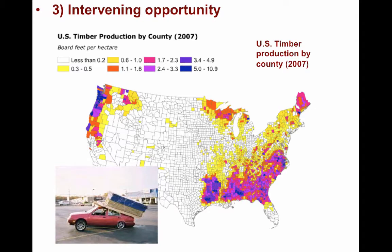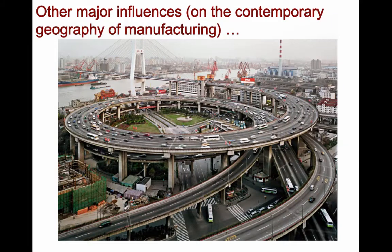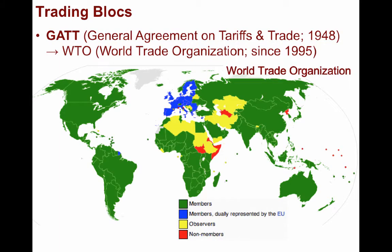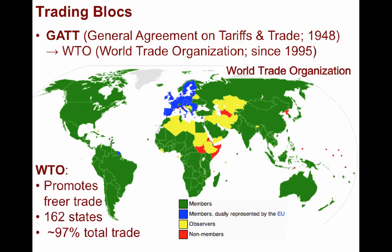Aside from what we previously covered, there are other major influences on trade and the contemporary geography of manufacturing, including regional and international trading blocs. The General Agreement on Tariffs and Trade, GATT, was organized in 1948 and was in effect until 1994, assisting in creating a multilateral trading system and reducing tariffs. In 1995, the World Trade Organization, or WTO, took the place of GATT. The WTO seeks to supervise and liberalize international trade, making it freer, and provides a forum for negotiations and for settling disputes.